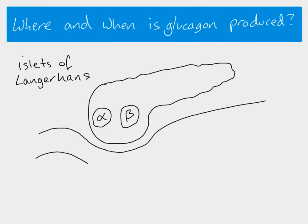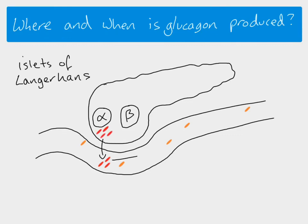Glucagon is produced when blood glucose concentrations decrease. When there's a decrease in blood glucose, the alpha cells detect that and respond by producing glucagon, which is released into the blood. At the same time, the beta cells also detect the decrease and will stop the production of insulin.